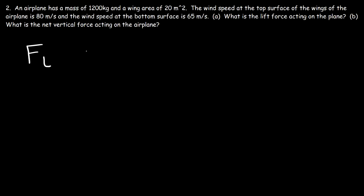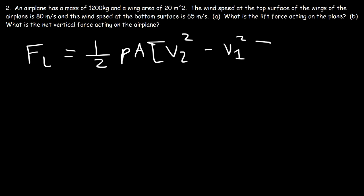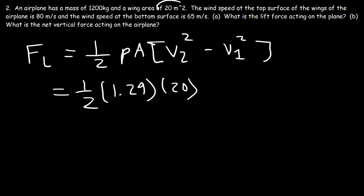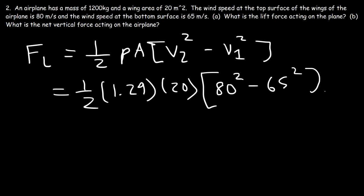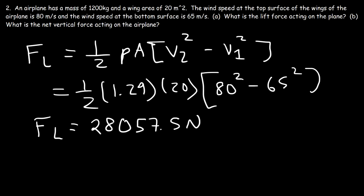Using the same equation: FL = ½ × ρ × A × (V_top² − V_bottom²). The density of air is 1.29 kg/m³, the wing area is 20 square meters, the speed at the top is 80 m/s and at the bottom is 65 m/s. So: 0.5 × 1.29 × 20 × (80² − 65²) gives a lift force of 28,057.5 newtons.